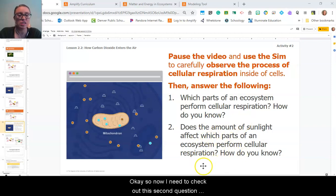Okay, so now I need to check out this second question about sunlight: does the amount of sunlight affect which parts of the ecosystem are performing cellular respiration? Because again, the amount of sunlight mattered in photosynthesis.